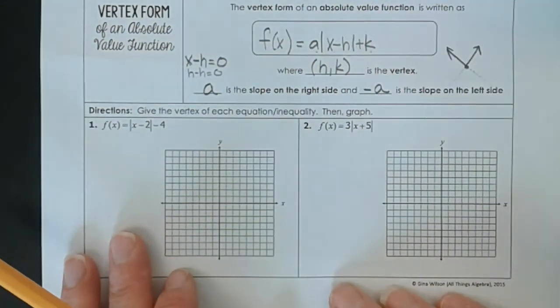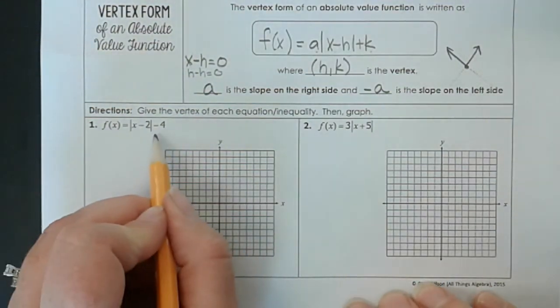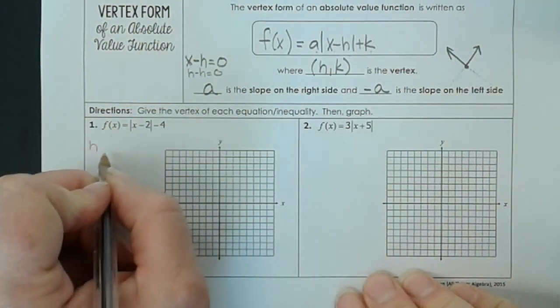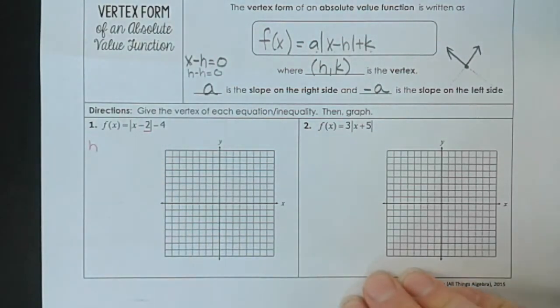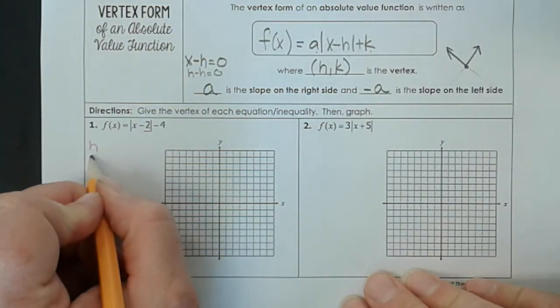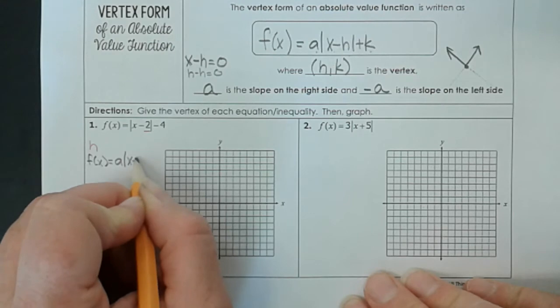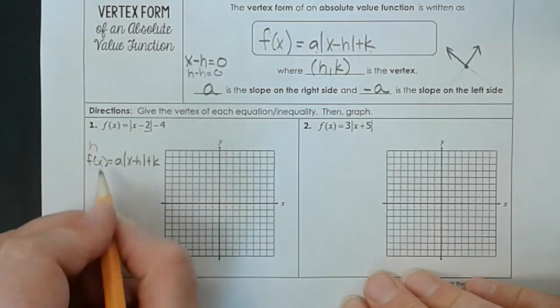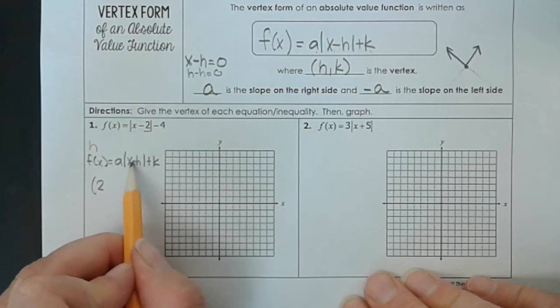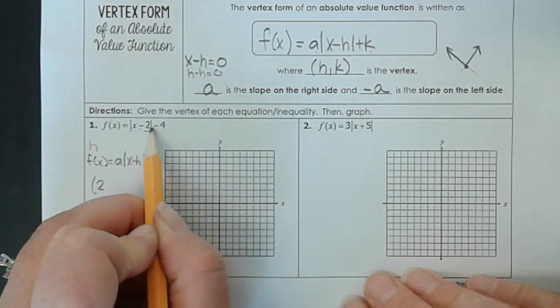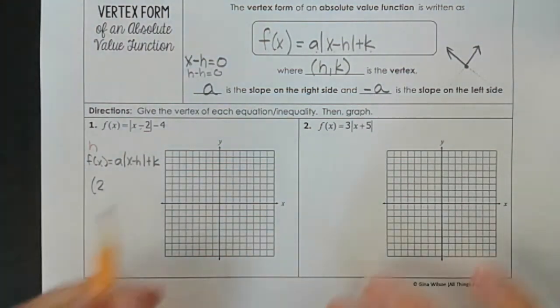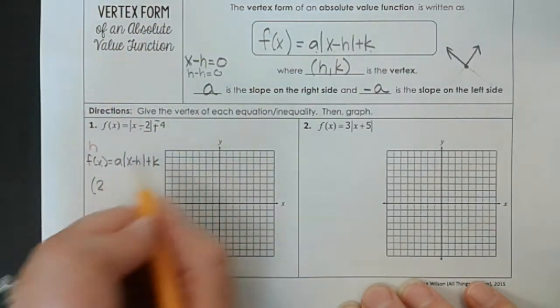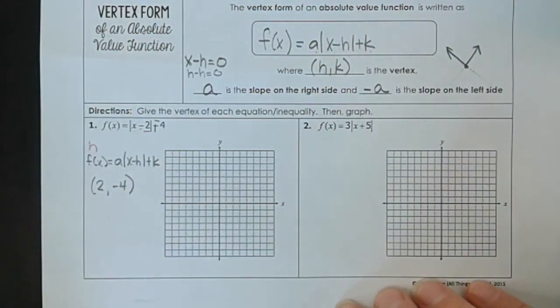All right, so let's do a few practice problems. Give the vertex of each inequality and then graph. h, k, well let's figure out where h is. h is right here. And in our original vertex form, we say f(x) equals a times x minus h plus k. So this is x minus h. So h in this case is 2. Because x minus h, x minus, and then we're subtracting a positive 2. And then k, this is plus k. Well remember that this is really just like plus negative 4. So truly our k is actually negative 4. So this is our vertex.